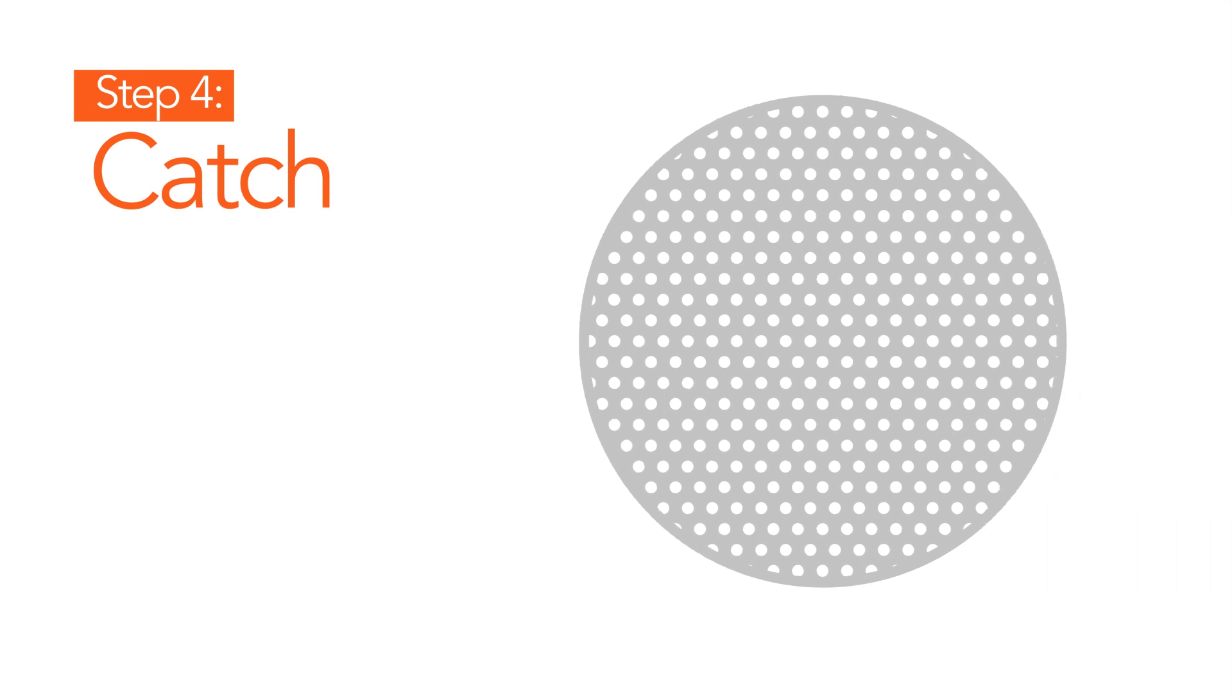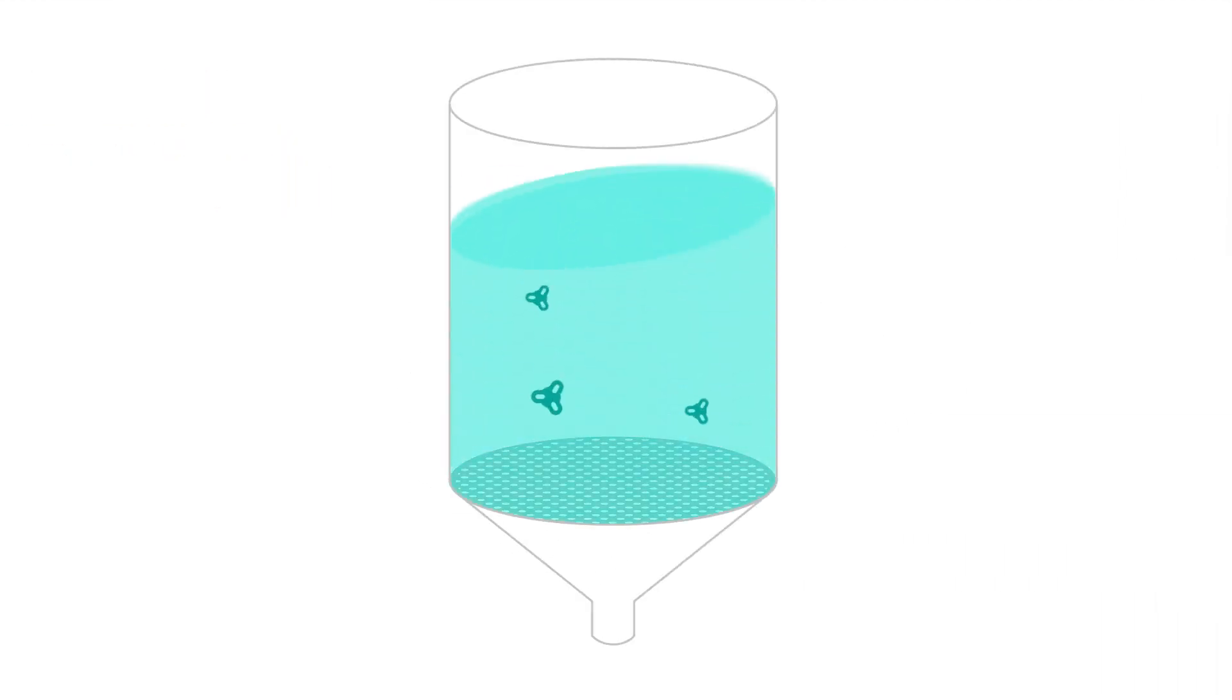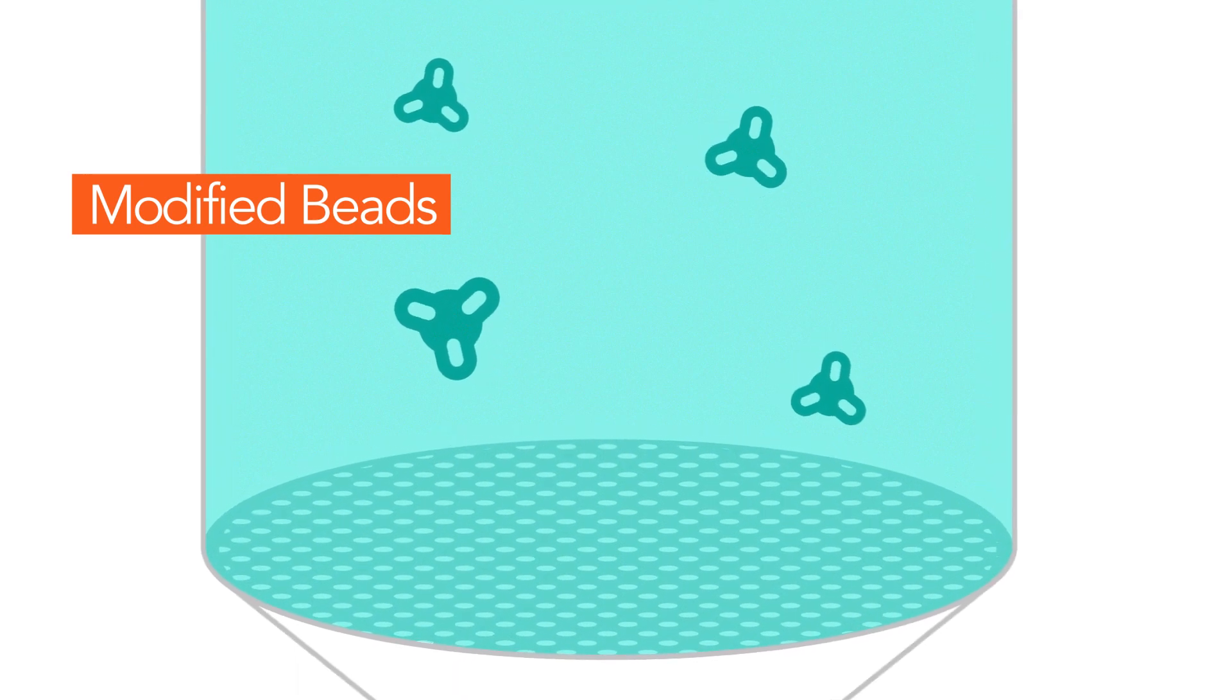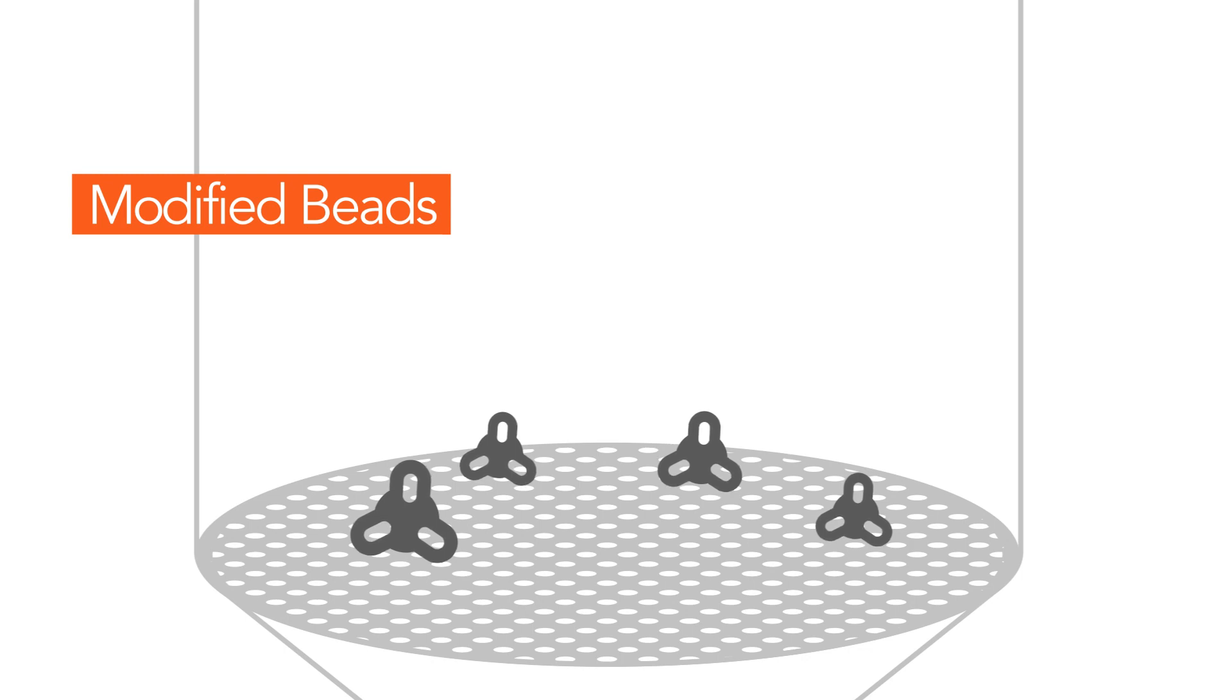Now let's catch your peptide! PEC works in fritted cartridges, filled with a suspension of aldehyde-modified beads. First, remove the storage media and condition the beads.